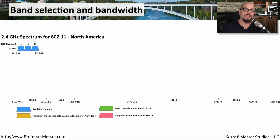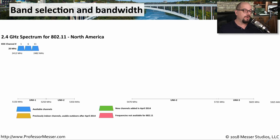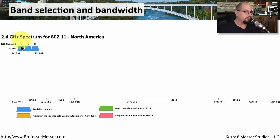Here's a chart showing the differences in available frequencies in the 2.4 gigahertz range versus the 5 gigahertz range, and how you can increase channel widths to use more frequencies simultaneously. Looking at the 2.4 gigahertz range, we see the different channels assigned by the IEEE. There are three channels that don't overlap with each other: channels 1, 6, and 11, each represented by 20 megahertz blocks.